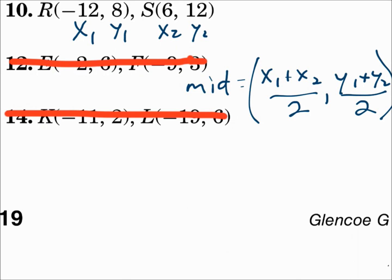For number 10, (-12, 8) is x₁, y₁. (6, 12) is x₂, y₂. Put the numbers in the midpoint formula. x₁ plus x₂ over 2, comma, y₁ plus y₂ over 2.